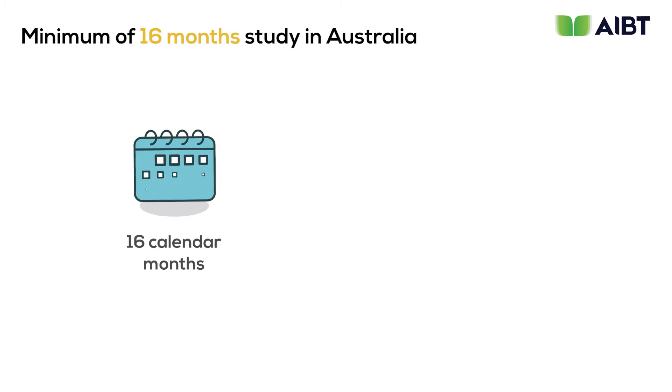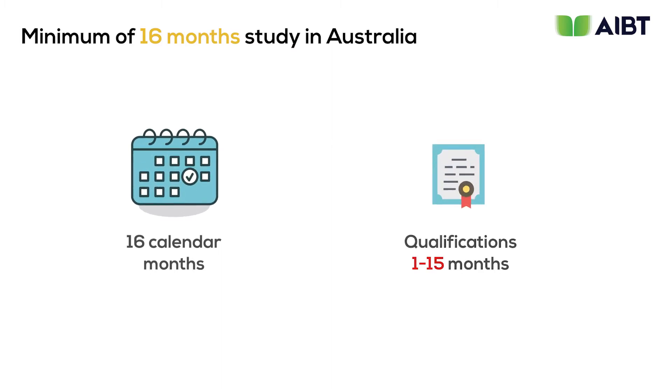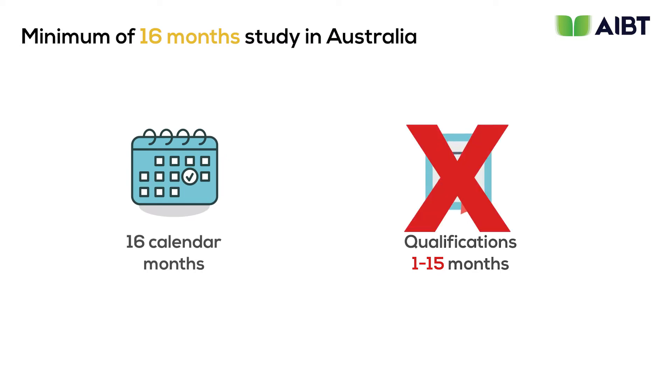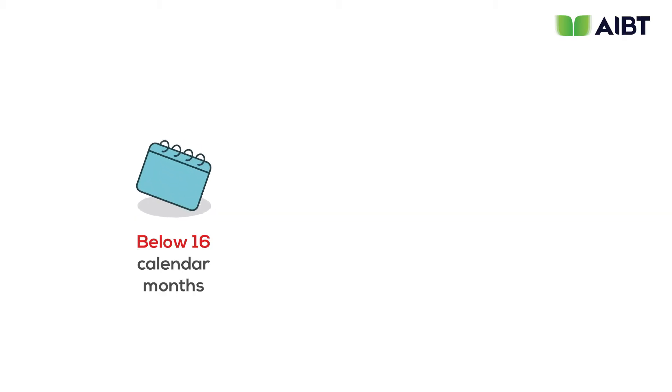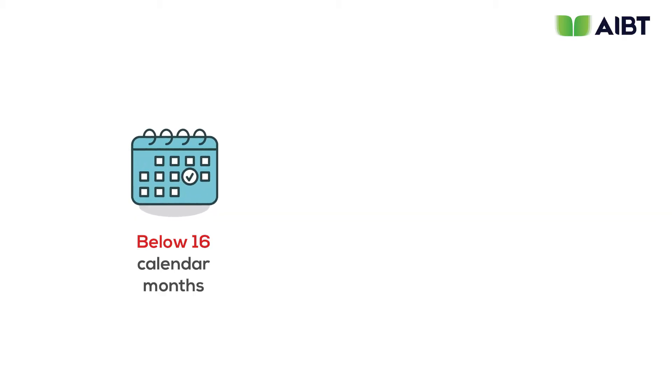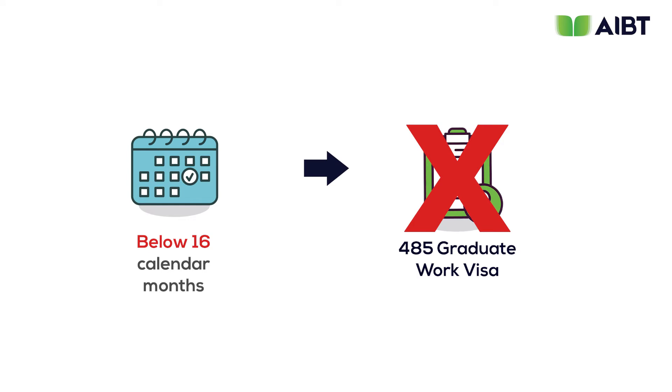Next, let's get a better understanding of the 16 calendar month requirement — it means your qualification cannot be shorter than 16 months. Some providers allow you to fast track a course and shorten the duration, but you must not reduce your studies below 16 months or you will not be eligible for the 485 graduate work visa. As a general rule, students who choose a course with a 92-week CRICOS duration meet the 16 calendar month requirement.